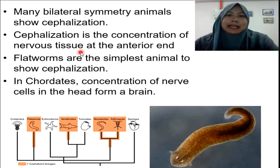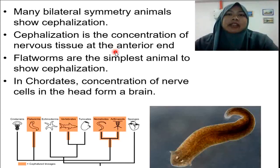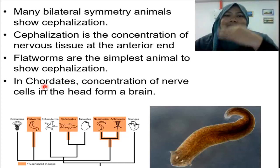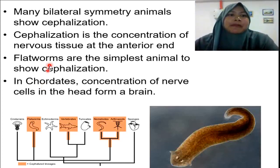Many bilateral symmetry animals show cephalization. Cephalization means the concentration of nervous tissue at the anterior end of the body. As for chordates, the concentration of nerve cells can be found at the head region, forming the brain. The flatworm shows the simplest animal showing cephalization.